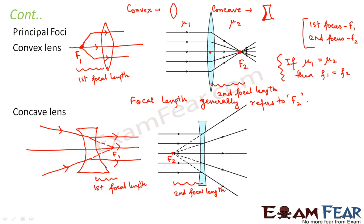You don't really need to get confused with first and second focal length. Every lens has two focal points F1 and F2. Whenever we talk about the focal length of a lens we generally mean the second focal point, because a convex lens is a converging lens and a concave lens is a diverging lens. The point where rays converge — or appear to converge — is the focus we generally refer to.